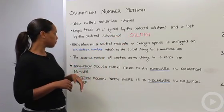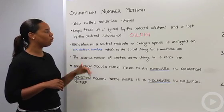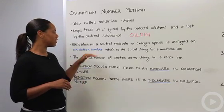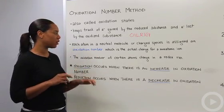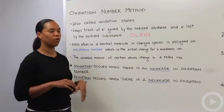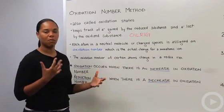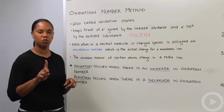Each atom in a neutral molecule or charged species is assigned what we call an oxidation number, and that's the actual charge for a monatomic ion. Remember, a monatomic ion—mono meaning just one—so a singular ionic species.